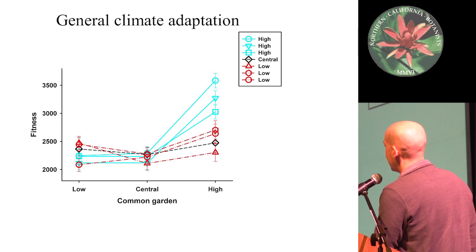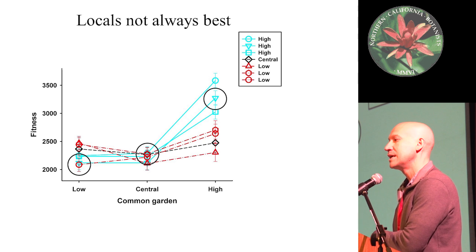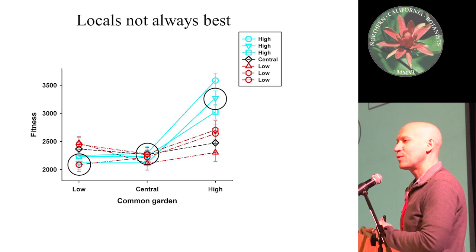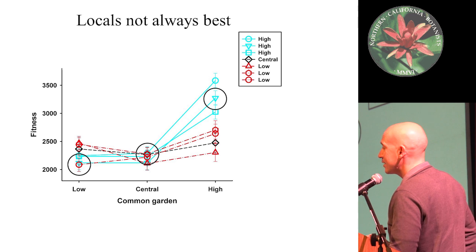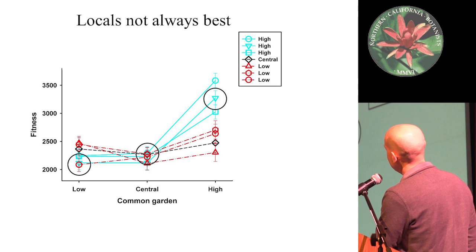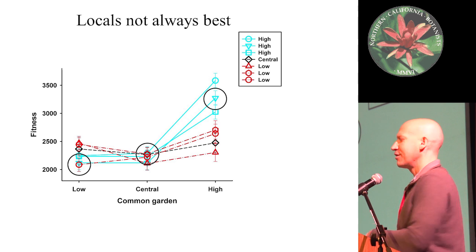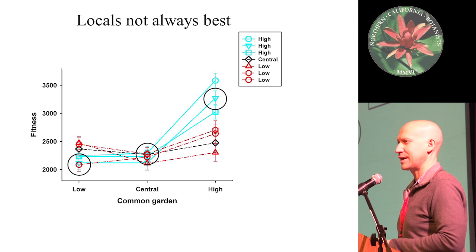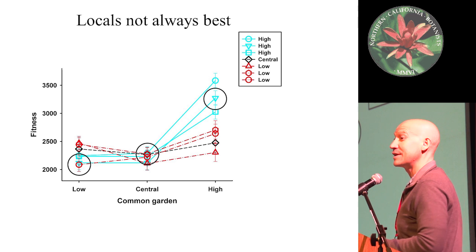With one exception — this one low elevation population does quite poorly, and that's actually the local population. That doesn't make much sense, but it may because this is only one time slice for the experiment. If you go back and reproduce this experiment over different years and different weather years, you may get different responses. The picture here is that you almost find someone else doing better in your own place, even though you get a general signal of climate adaptation. Just think about what that may mean for the conservation value of different populations.